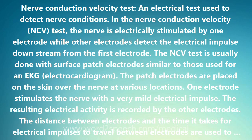The patient having a NCV test lies on an examination table. The electrodes are placed on the skin over the nerve to be studied. An electrical stimulator is then placed on the skin near the electrodes and is used to create an electrical current strong enough to fully stimulate the nerve. A computer is used to record responses as various nerves are tested. The NCV test is also called a nerve conduction study, or NCS.